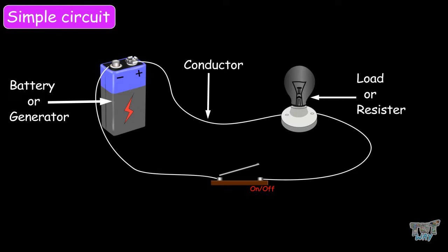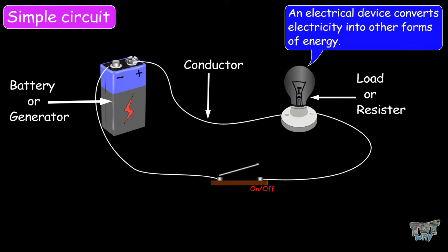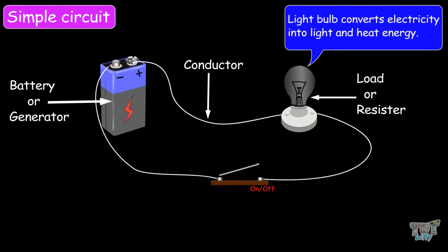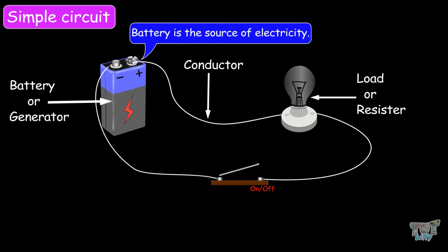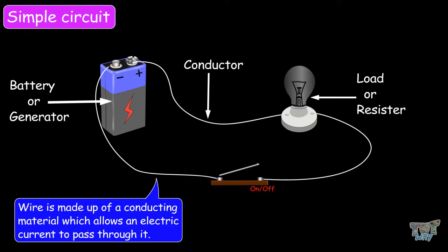Here we have a light bulb as an electrical device. An electrical device converts electricity into other forms of energy. For example, the light bulb converts electricity into light and heat energy. The battery is the source of electricity. The wire is made up of a conducting material which allows an electric current to pass through it, for example, copper wire.